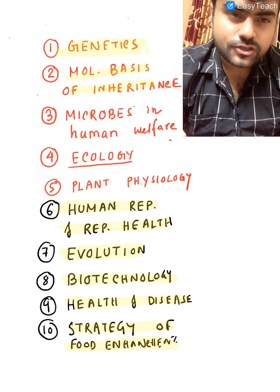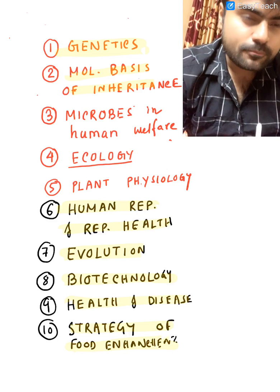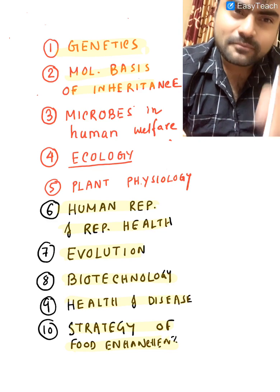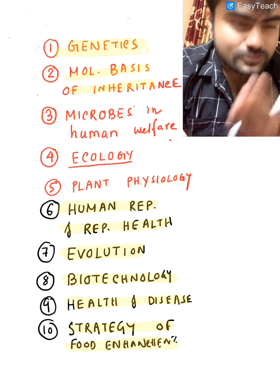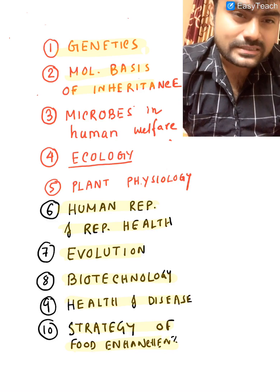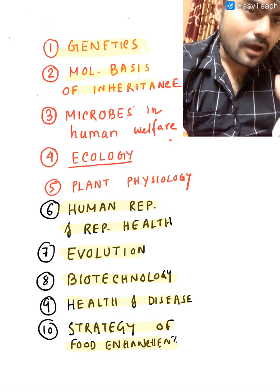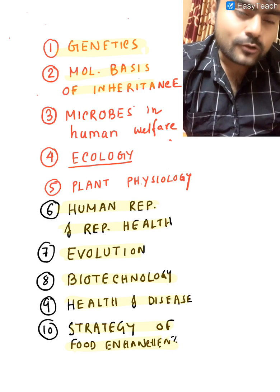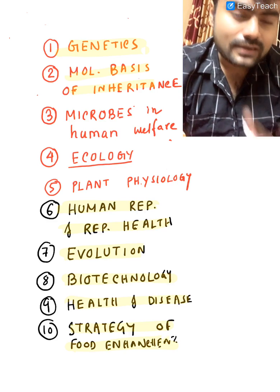Next is human reproduction and reproductive health. You can expect at least 10 questions from this part alone. Everything in reproductive health is important — like contraception: the barrier method (condom, diaphragm, sponge), the hormonal method (OC pills, estrogen pill, combined pill, progesterone-only pill), Mirena, and the copper intrauterine device. Then there is Saheli — the chemical name is Ormeloxifen, also known as Centchroman. Now its name is Chaya. So Chaya, Saheli, Centchroman, and Ormeloxifen are all the same. It is a non-steroidal drug that inhibits estrogen.